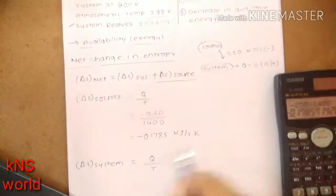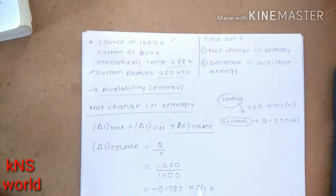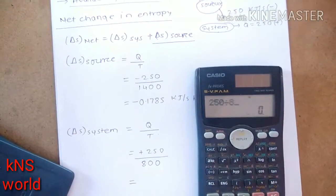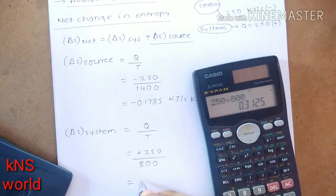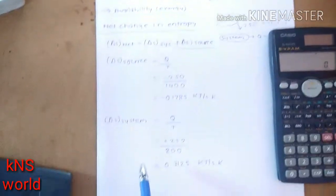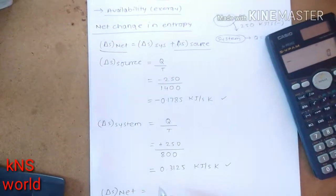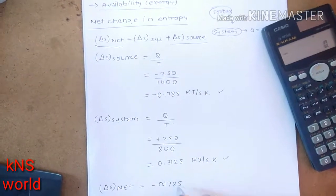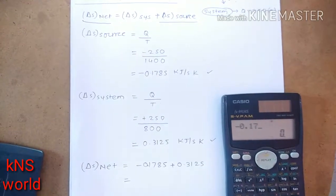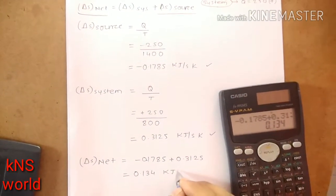Next, find delta S of the system using the same formula Q/T, but Q is positive 250 since the system is absorbing heat. So positive 250 divided by 800 Kelvin equals 0.3125 kJ/s·K. Adding both: delta S_net equals minus 0.1785 plus 0.3125, which equals 0.134 kilojoules per second per Kelvin.